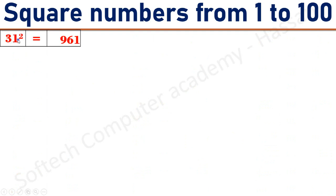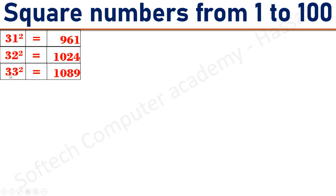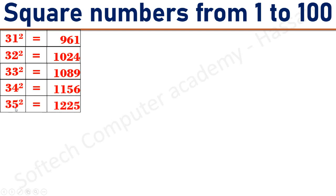31 square equals 961. 32 square equals 1024. 33 square equals 1089. 34 square equals 1156. 35 square equals 1225.